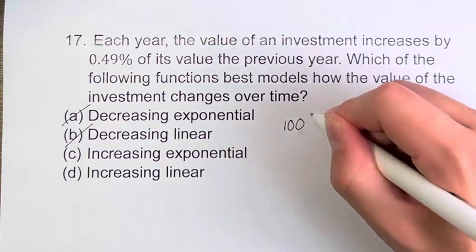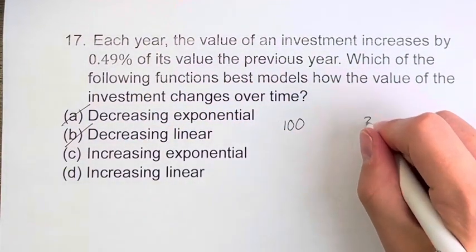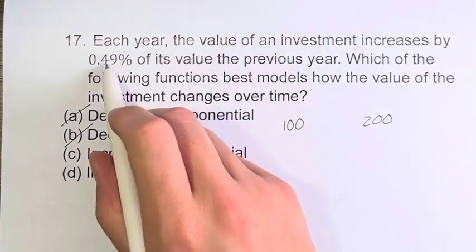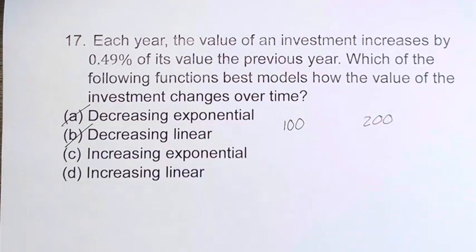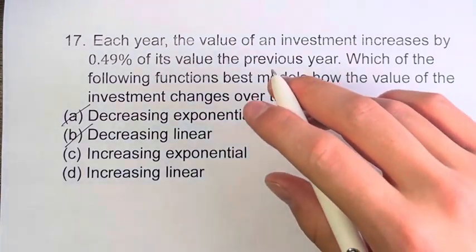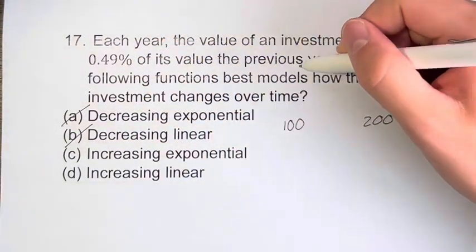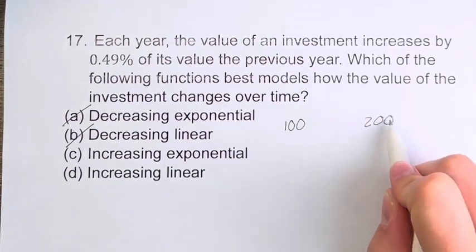Let's say we start off with $100. Since it's increasing every year, at some point we're going to be around $200. 0.49% is very little, so it might take a while to get there. But let's just say we're taking this to infinity. That's going to eventually be hit at some point. 0.49% of the value of 100 is different from 0.49% of 200.